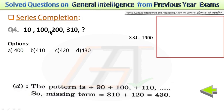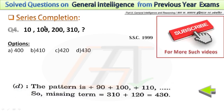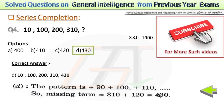In the fourth question, the series is 10, 100, 200, 310. Again, this is an addition series. I have shown the pattern in the explanation. If you find the difference between consecutive numbers, the pattern is plus 90, plus 100, plus 110. Each time, 10 is added to the previous difference. So after 110, the next difference is 120. To find the missing term, add 120 with 310, giving an answer of 430.